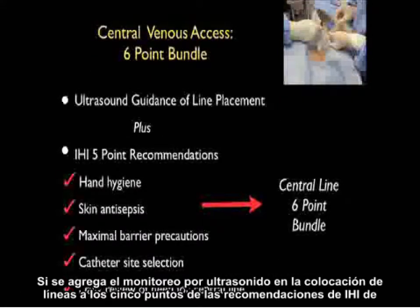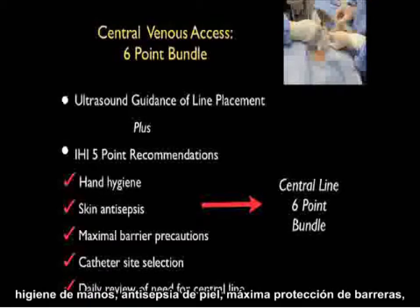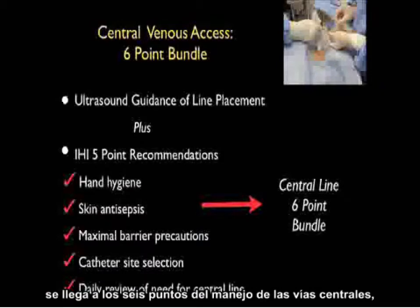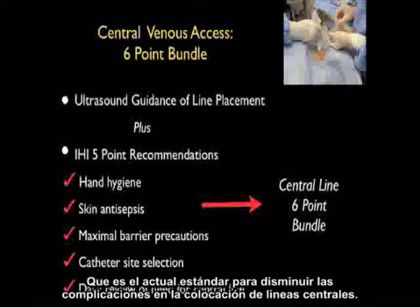If one adds ultrasound guidance of line placement to the five-point IHI recommendations — hand hygiene, skin antisepsis, maximal barrier precautions, catheter site selection, and daily review of the need for a central line — one arrives at the central line six-point bundle, the current standard for decreasing complications of central line placement.